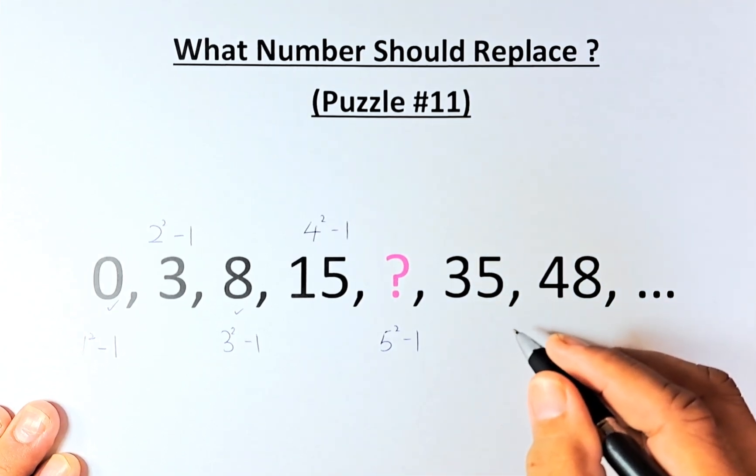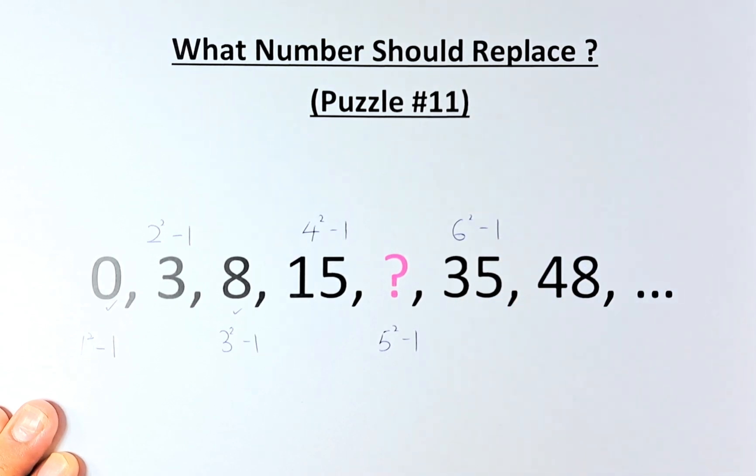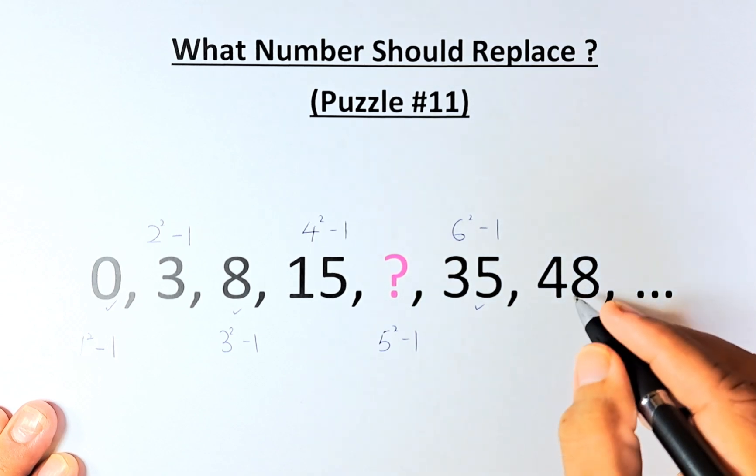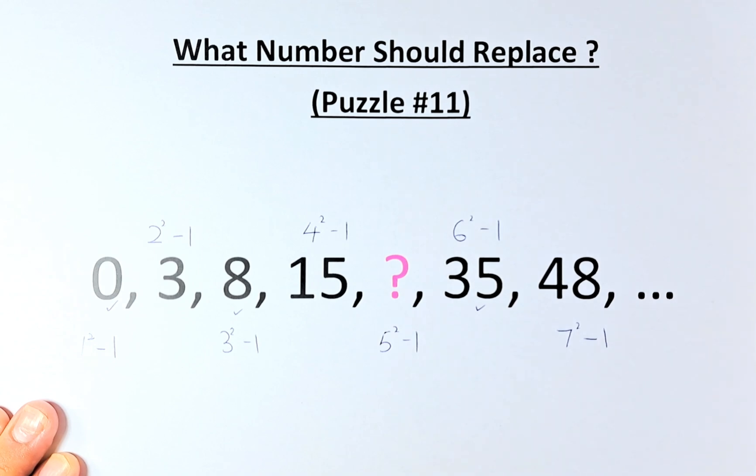35 is 6 squared minus 1. 6 squared minus 1 is 36 minus 1 that gives us 35. And of course, 48 is going to be 7 squared which is 49 minus 1.